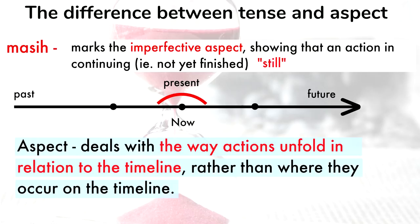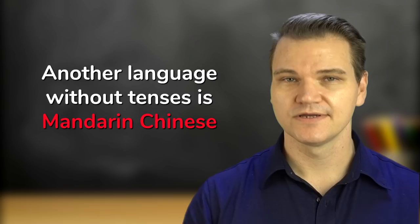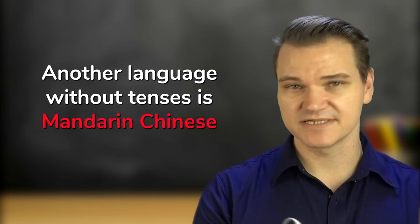Another language without tenses is Mandarin Chinese. I mentioned this in my video comparing Chinese and Japanese, but unfortunately I messed up my explanation a little bit. Here's the present tense sentence I gave in that video. This means I go to school.